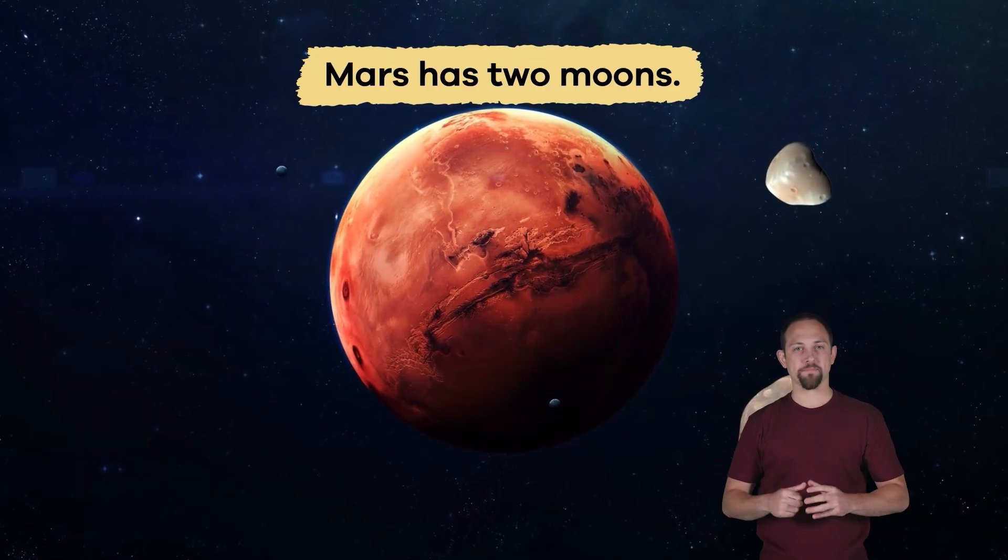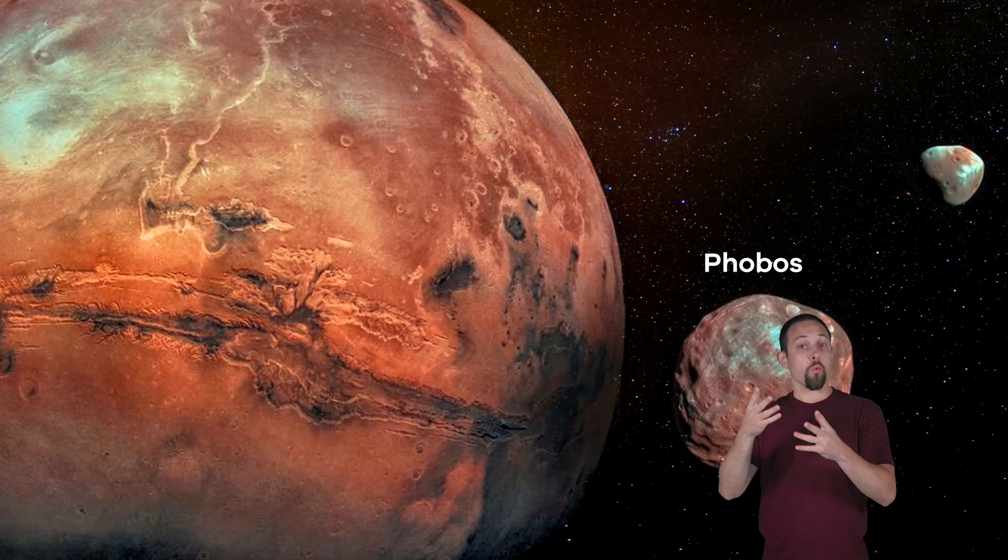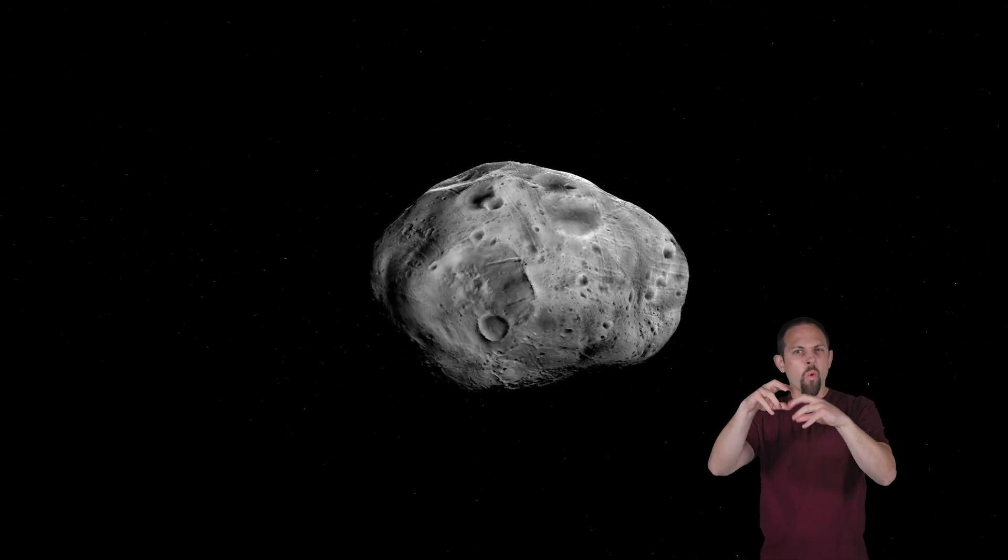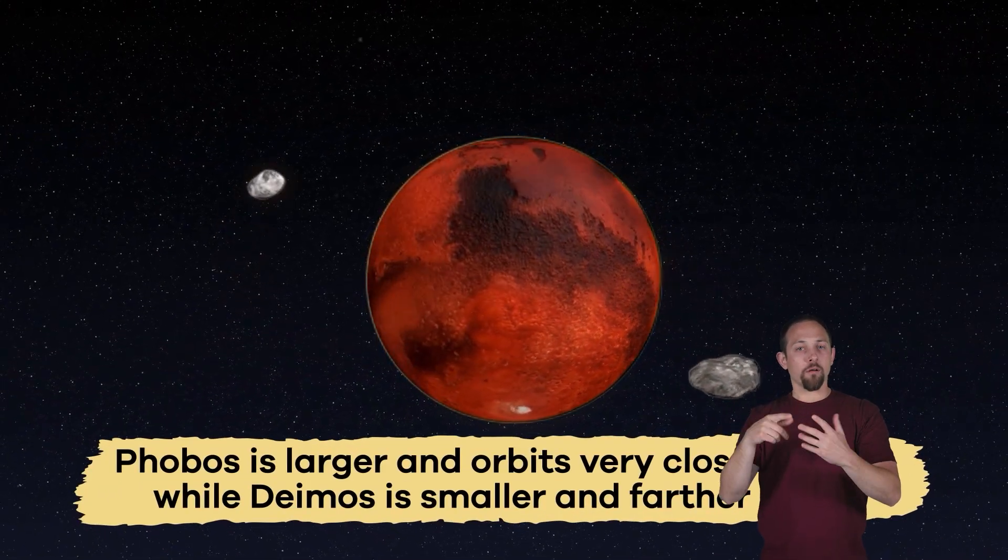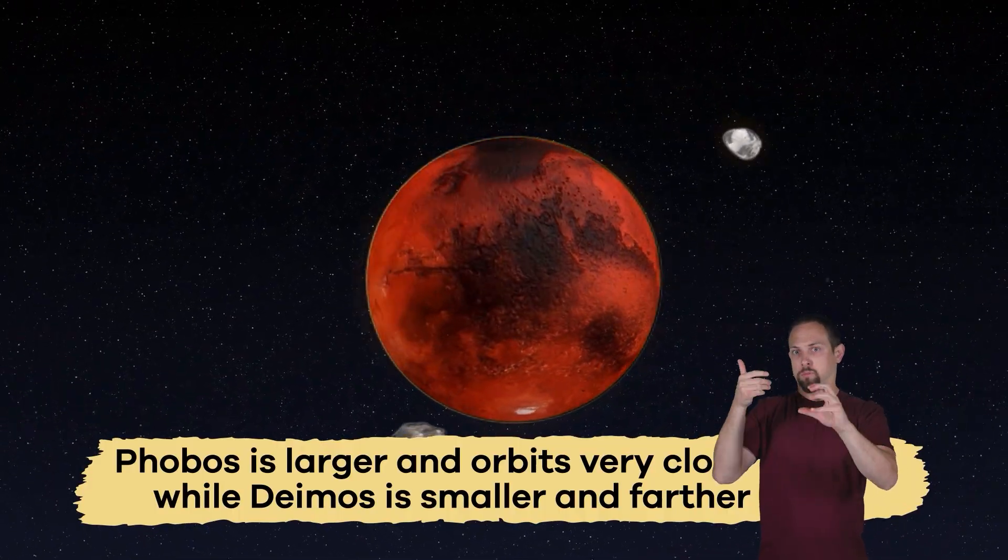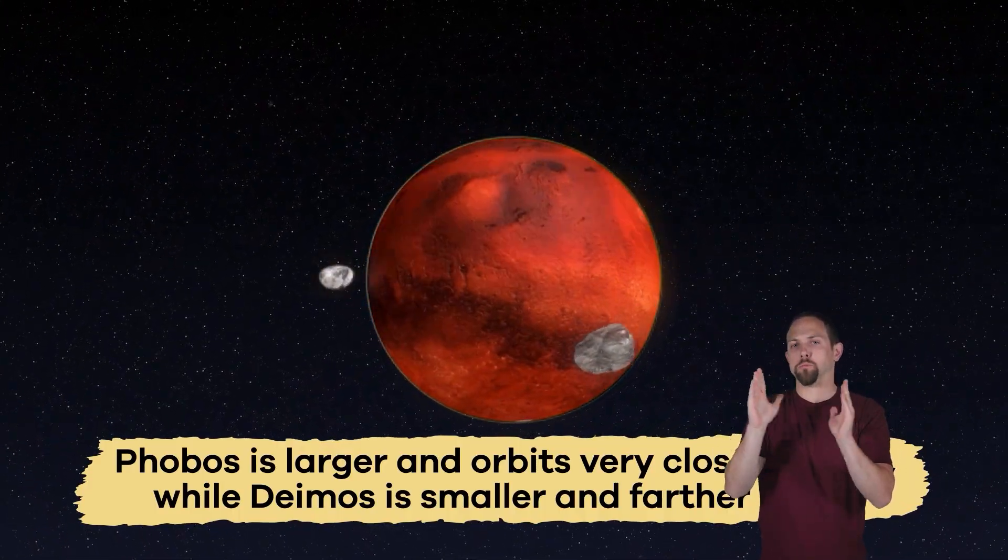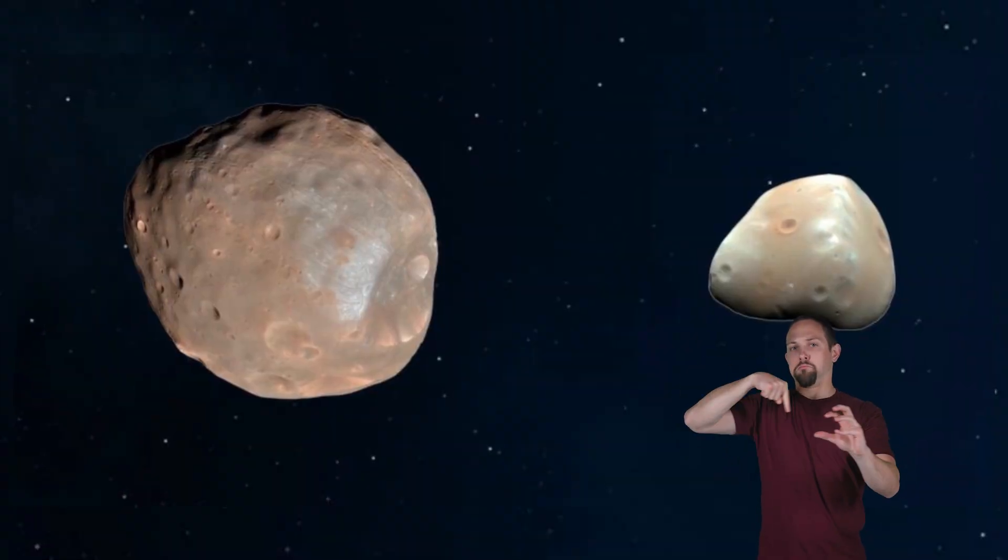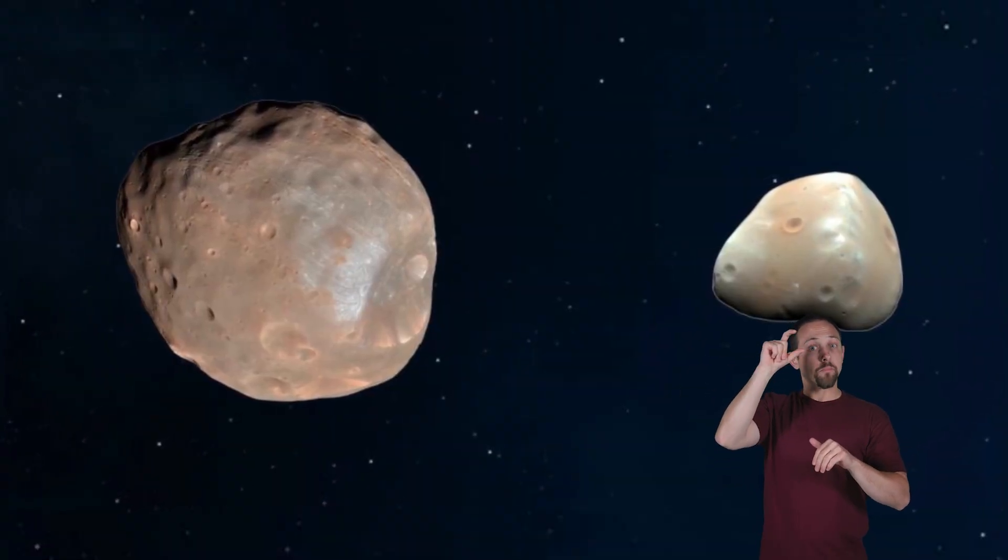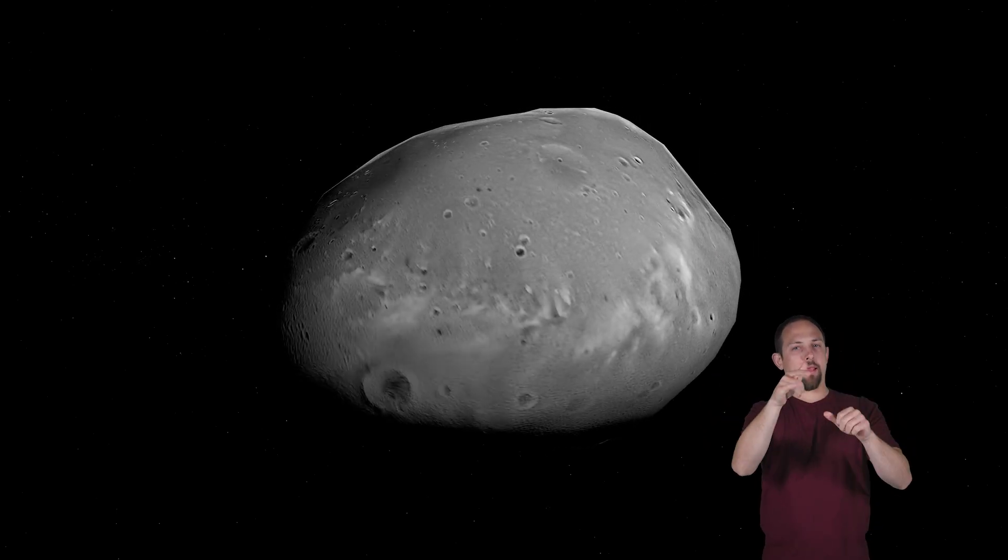Did you know that Mars has two moons? They are called Phobos and Deimos. Instead of being round like our moon, they are oddly shaped, kind of like potatoes. Phobos is larger and orbits very close to Mars, while Deimos is smaller and farther away. Scientists think these moons might actually be captured asteroids, which makes them especially interesting to study.